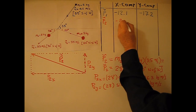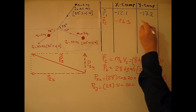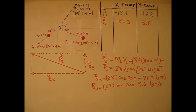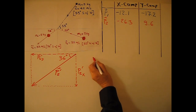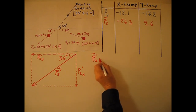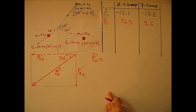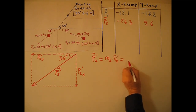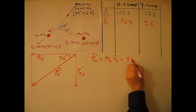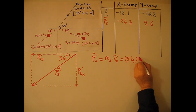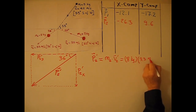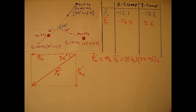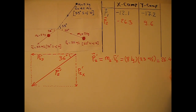p2x is negative 26.3 and p2y is 9.6. Now for p2 prime, the momentum of the second marble just after the collision: p2 prime equals m2 times v2 prime, where m2 is 8 kilogram times 3.3 meters per second, giving 26.4 kilogram·meters per second.